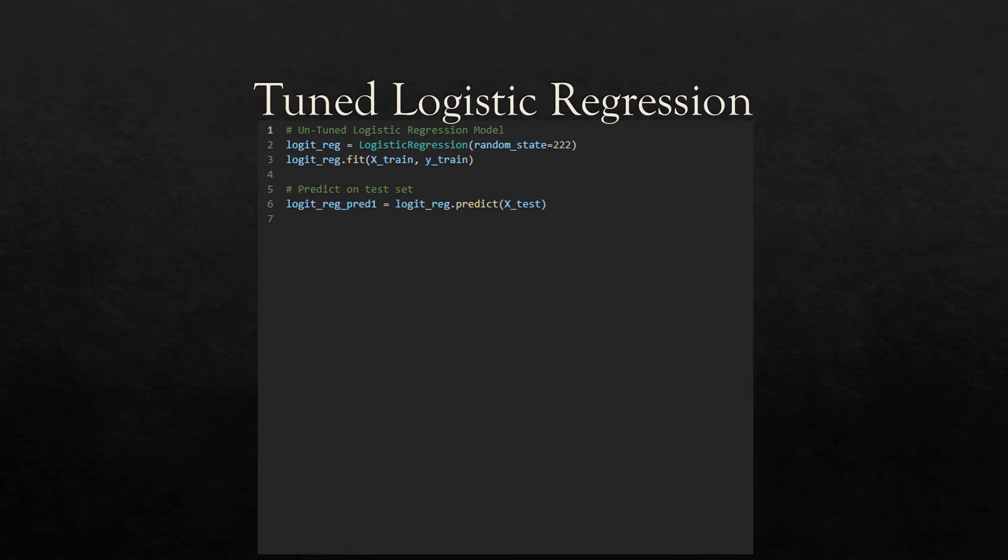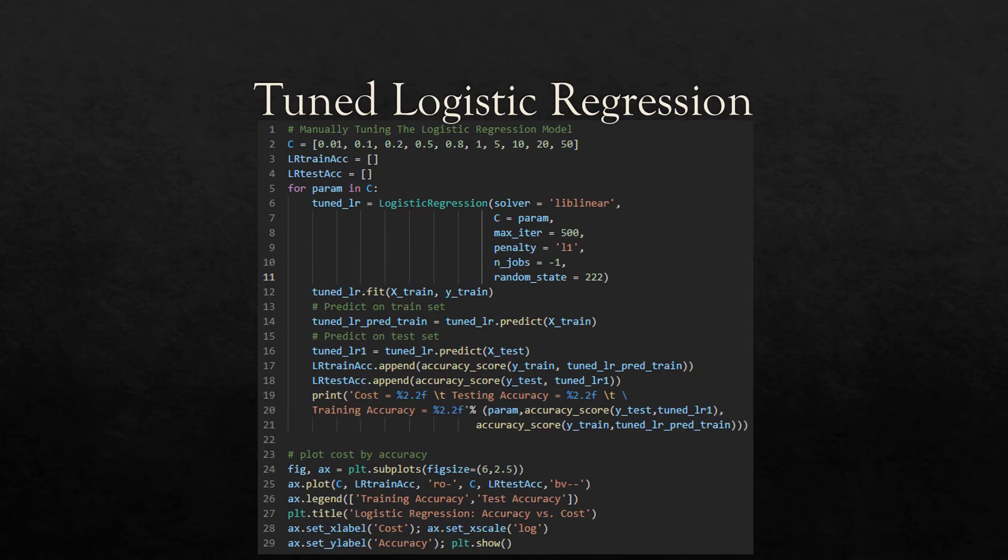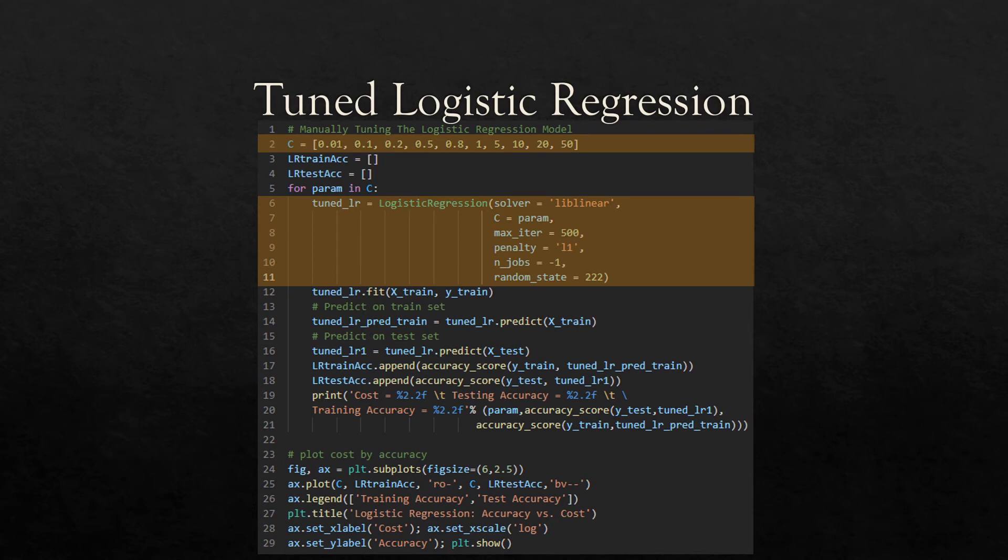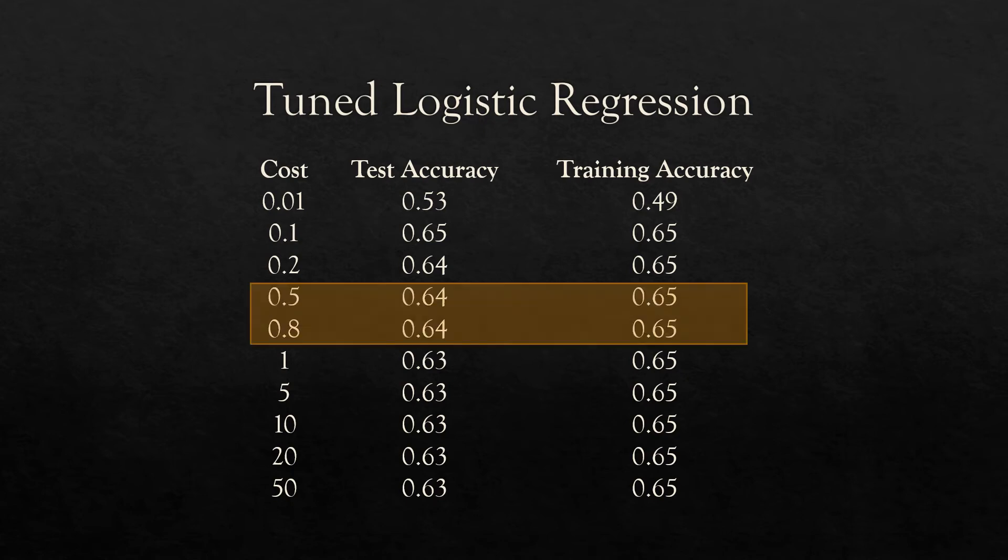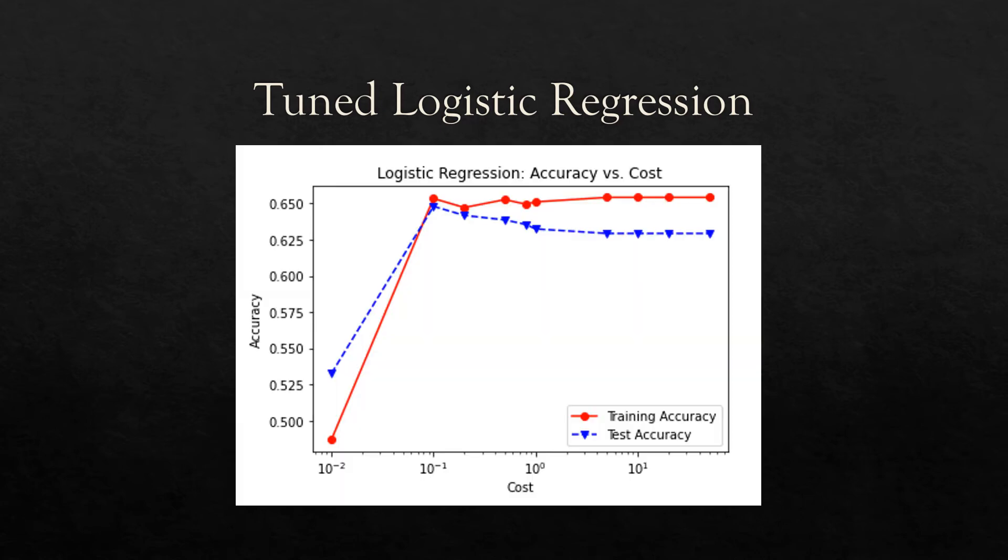From scikit-learn, the logistic regression function is called on a specified random state and then fitted on the training data and subsequently predicted on the test data. Hyperparameters are manually tuned on the logistic regression model over a list of different cost values in an attempt to improve the baseline accuracy score. The results show that the optimal test accuracy of 64% is contained within the cost hyperparameters between 0.5 and 0.8. The training and test accuracy are then plotted.